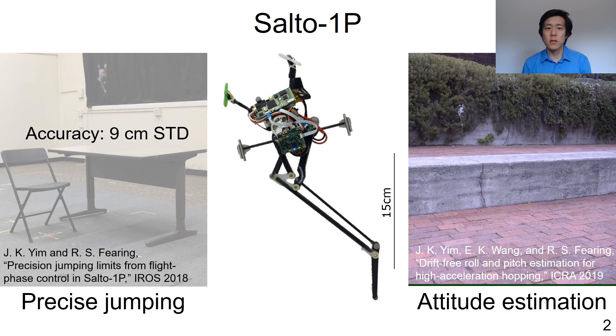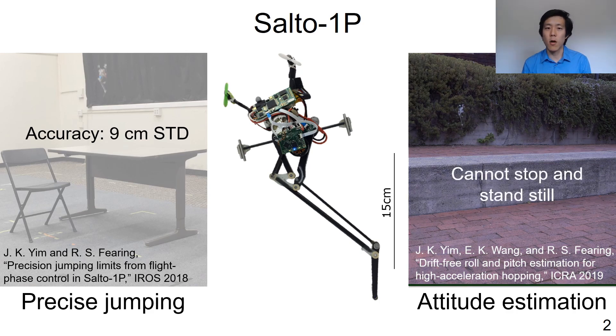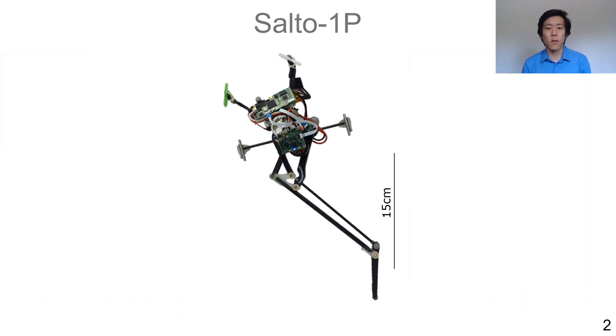In addition, flight phase control estimation does not handle the problem of getting the robot to stop and stand still after a landing. In this work, we developed stance phase control to enable Salto 1P to do precise jumping and land and stop. First, I'll present the stance phase model for the robot.